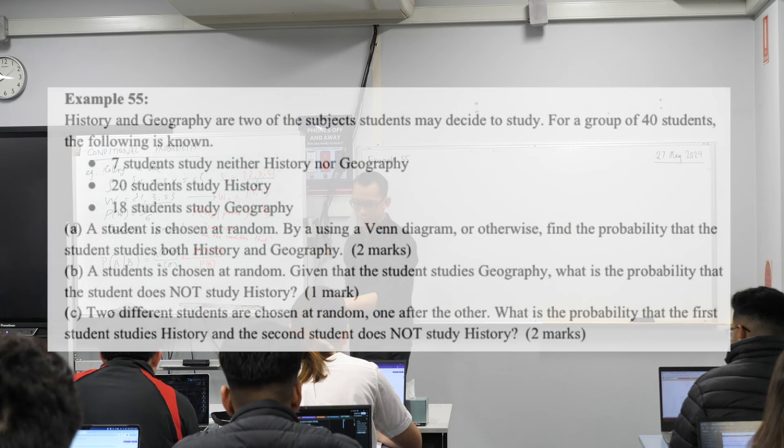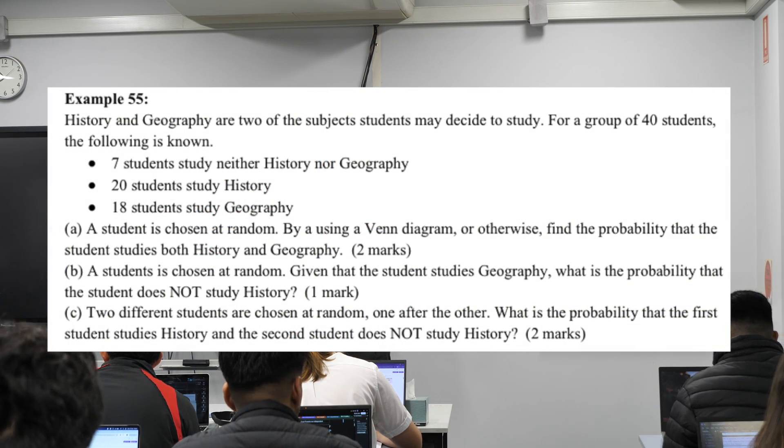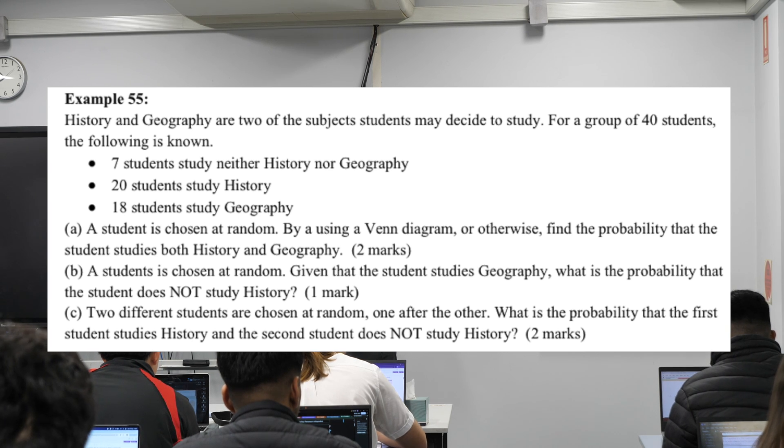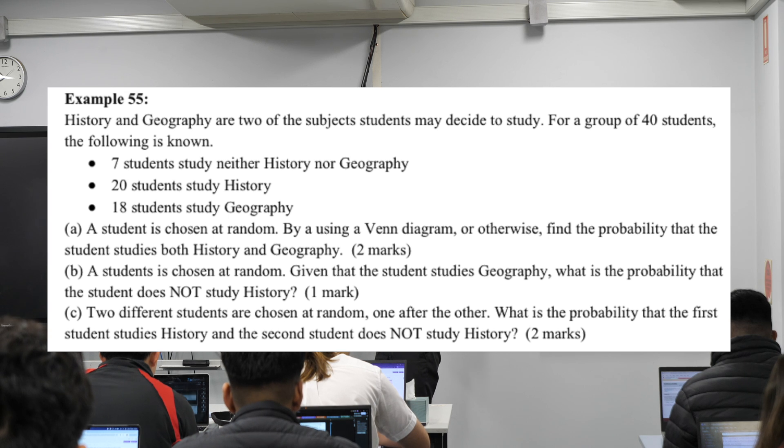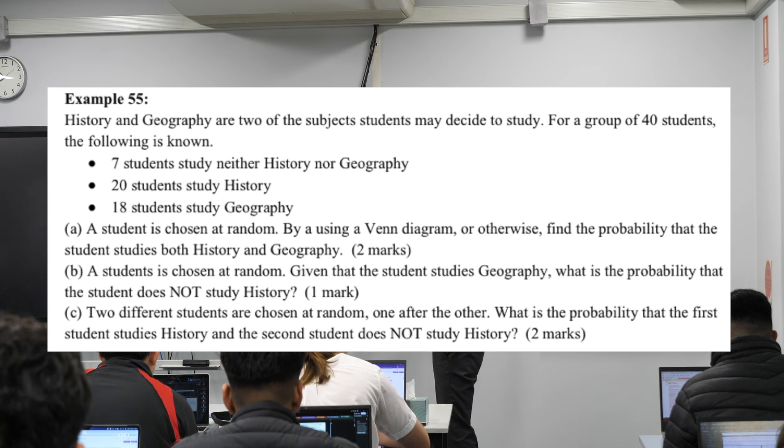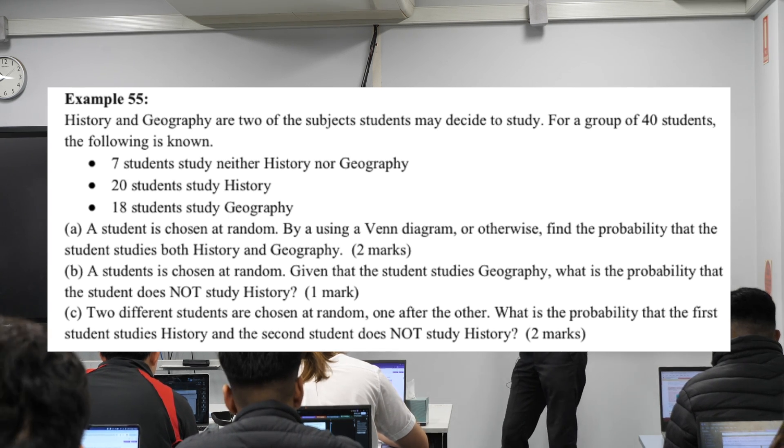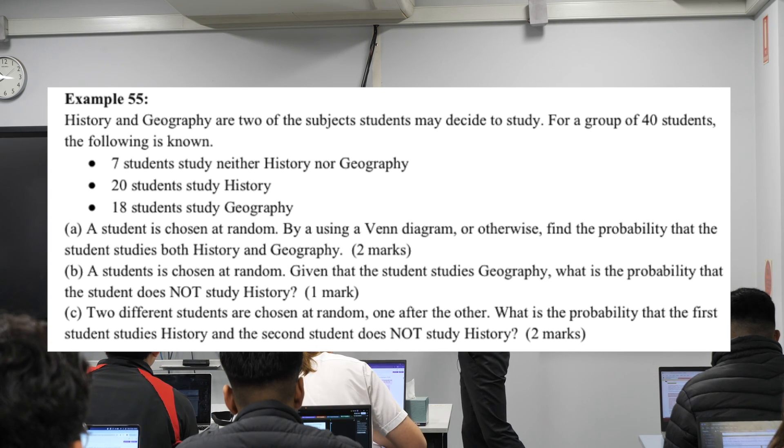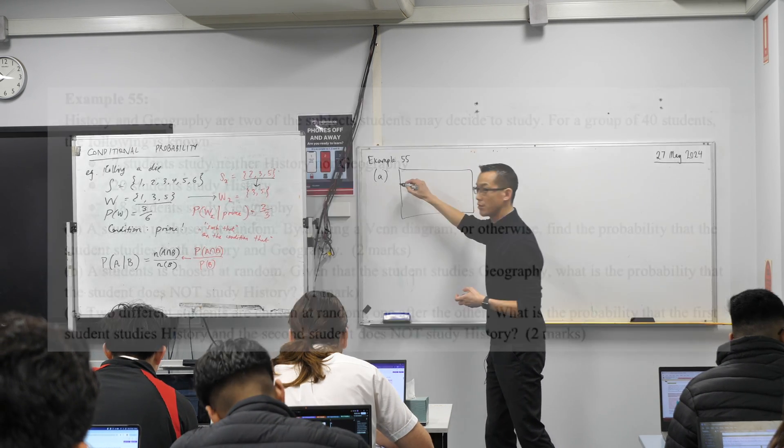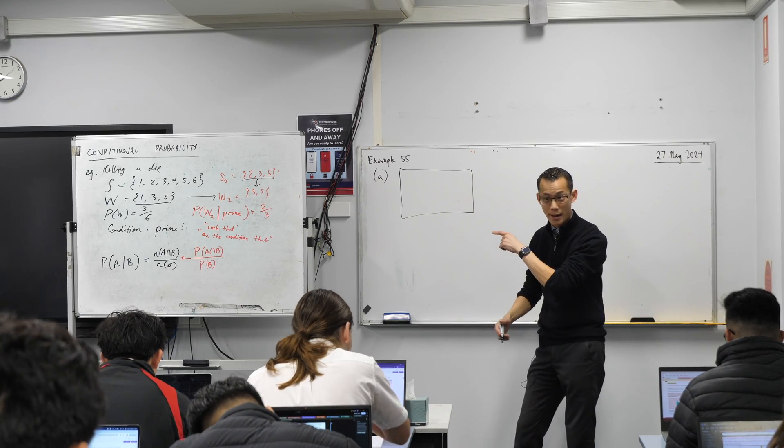Part A: Students chosen at random, using a Venn diagram or otherwise, find the probability that a student studies both history and geography. How gentle are them to give us a solution method. They've suggested Venn diagram because it's generally the best way to do it in situations like this. There is another way to do this without a Venn diagram, which we'll talk about in a minute.